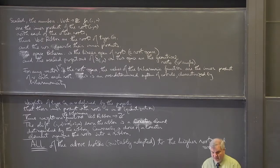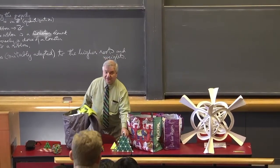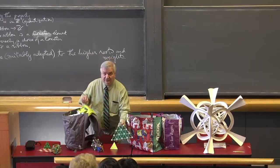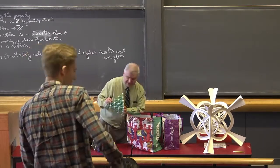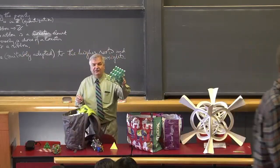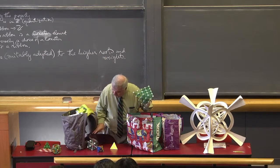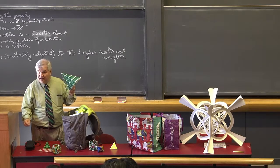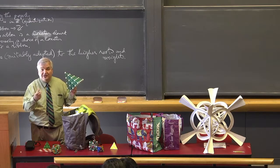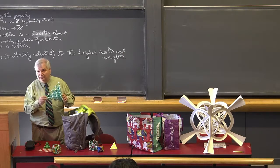If you work over SL3, the weight lattice — Chase will bring the weight lattice. This is a root lattice of SL4, and instead of the line, instead of Z mod n, we'll have in the higher case a piece of the weight lattice of the corresponding group, which I'm going to define.